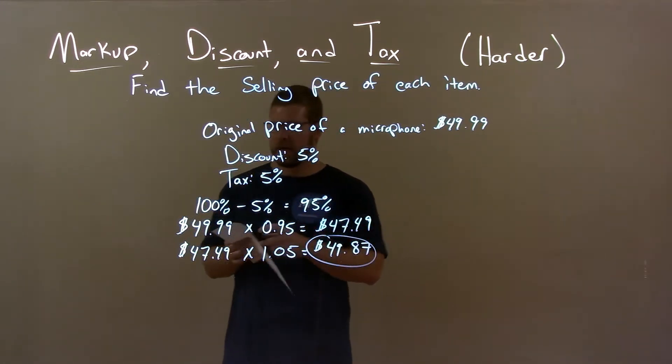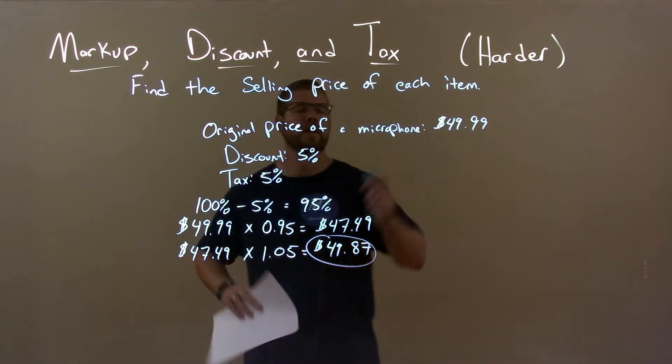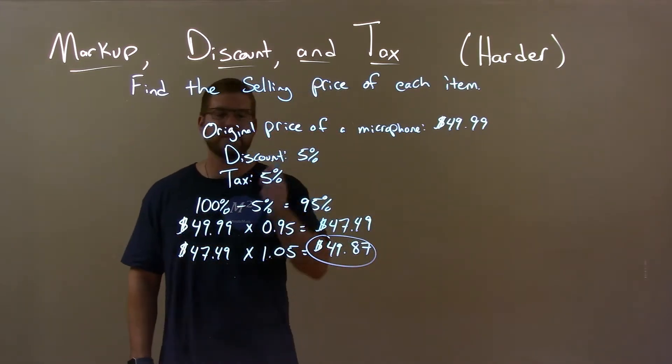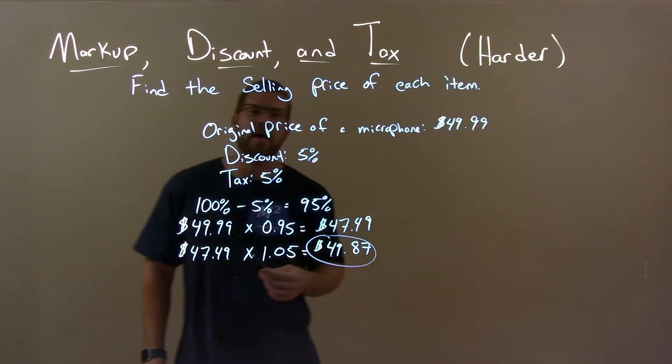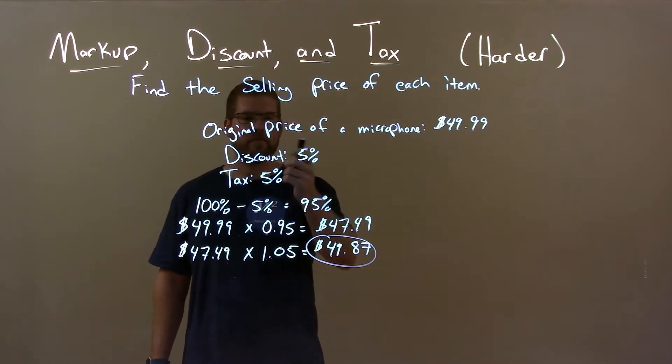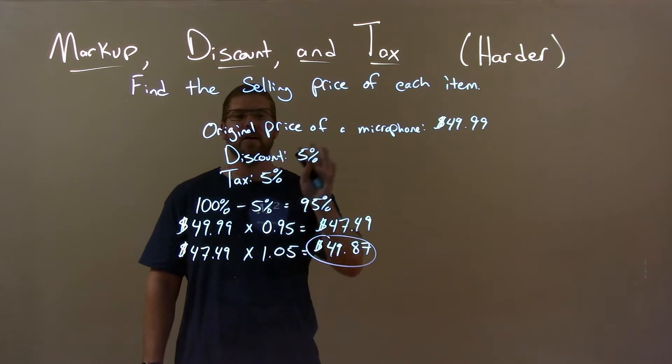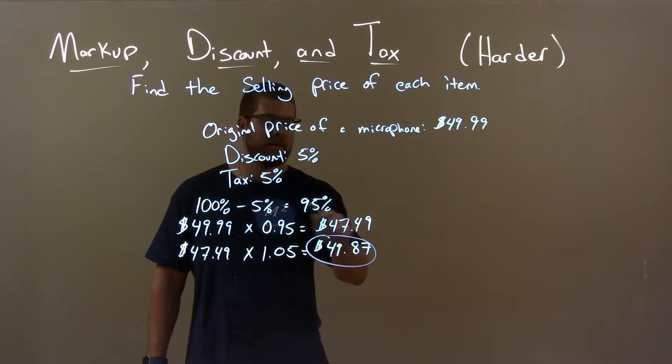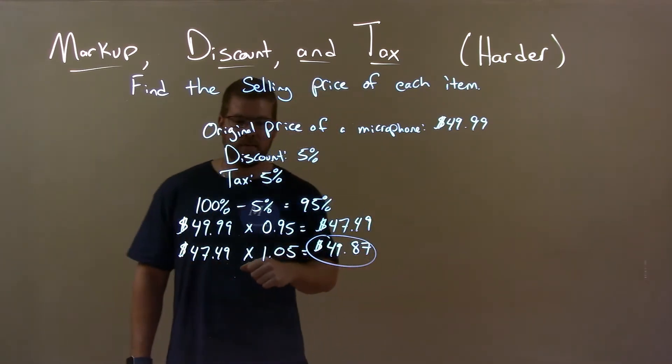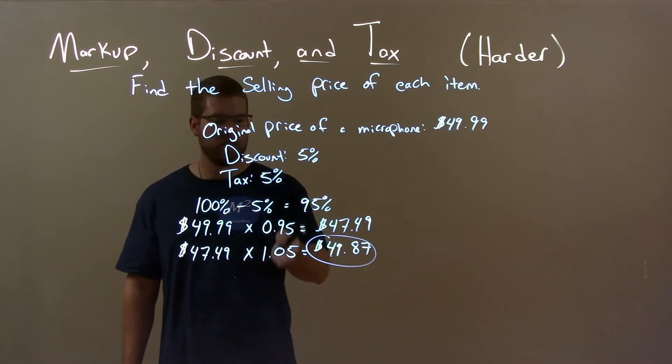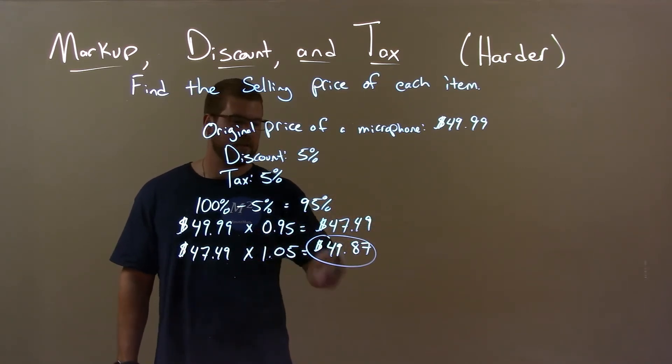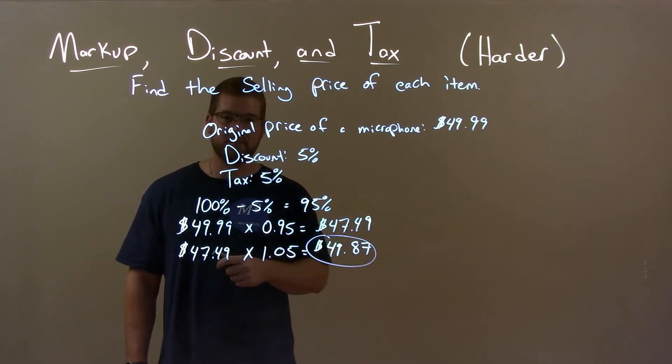So quick recap, we're given the original price of a microphone is $49.99, discount is 5%, and tax is 5%. And we have to find the final sale price. Well, 5% discount means we pay 95% of the original price. That comes out to be $47.49. Then, a 5% tax on there gives us a final sale price of $49.87.